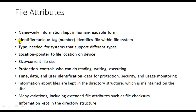The next attribute is the identifier. The identifier is a unique, automatically generated number that identifies the file within the file system. The operating system automatically generates one number and assigns it to the file you generated. A normal user cannot see the identifier information.